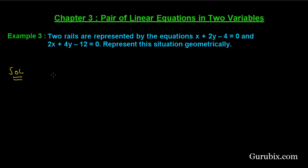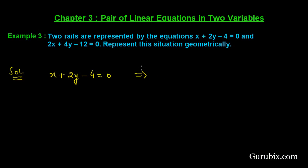We shall take the first equation, that is x plus 2y minus 4 equals to 0, and write it in terms of x. Then y equals to 4 minus x over 2.